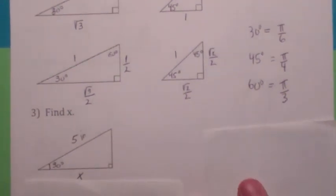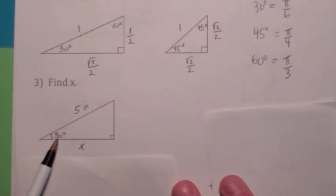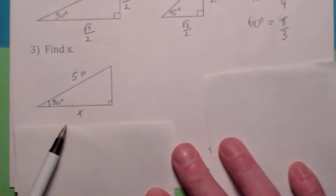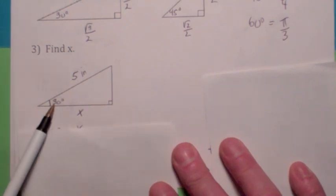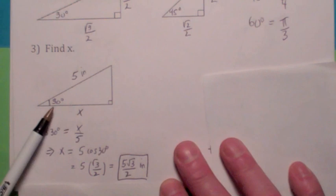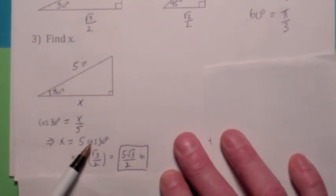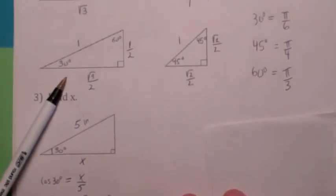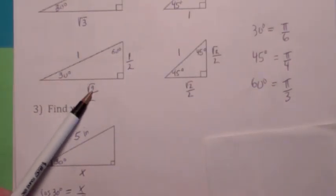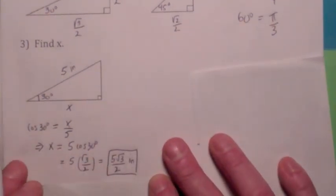Find x. I'm giving you a right triangle where this angle is 30 and this side is 5. You want to find a trig function that involves this angle, this side, and this side — how about cosine? Cosine of 30 equals x over 5, so x equals 5 cosine 30. Recall the cosine of 30 is adjacent over hypotenuse: radical 3 over 2. So your answer is 5 radical 3 over 2 inches.